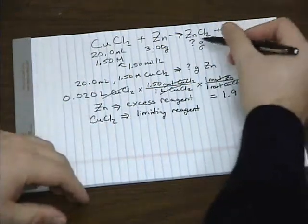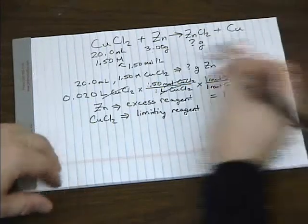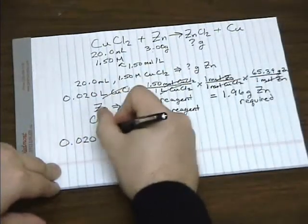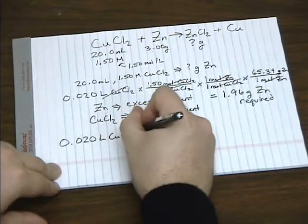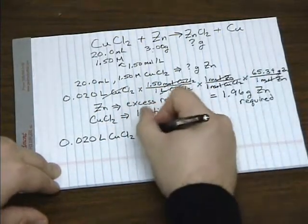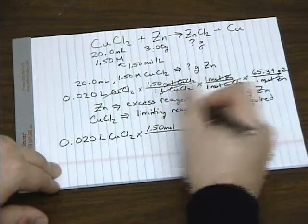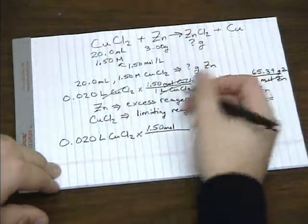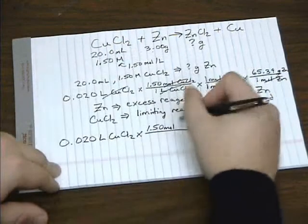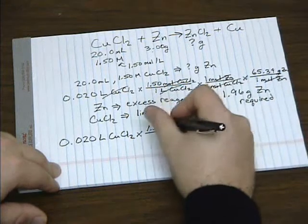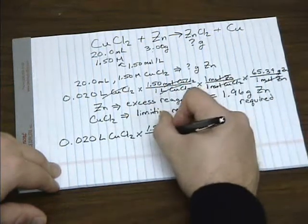Now we can find how many grams of this product we're going to give. So we'll start with our limiting reagent like we did before. Since we're given the volume of a molarity, we use that to convert what's given to moles.